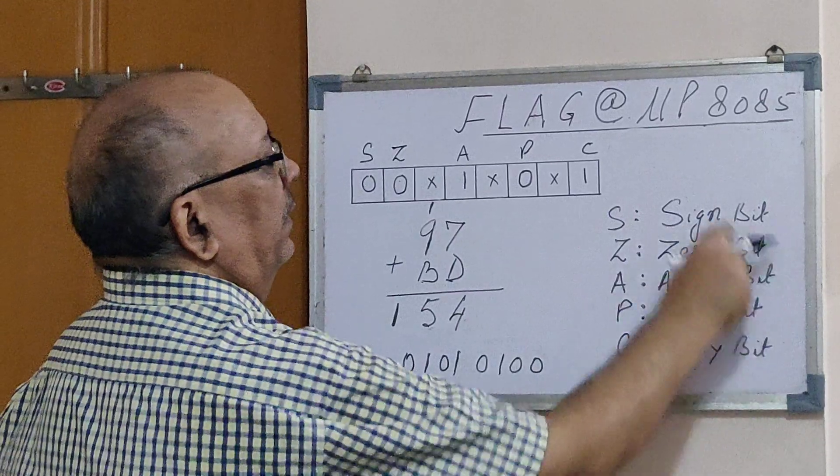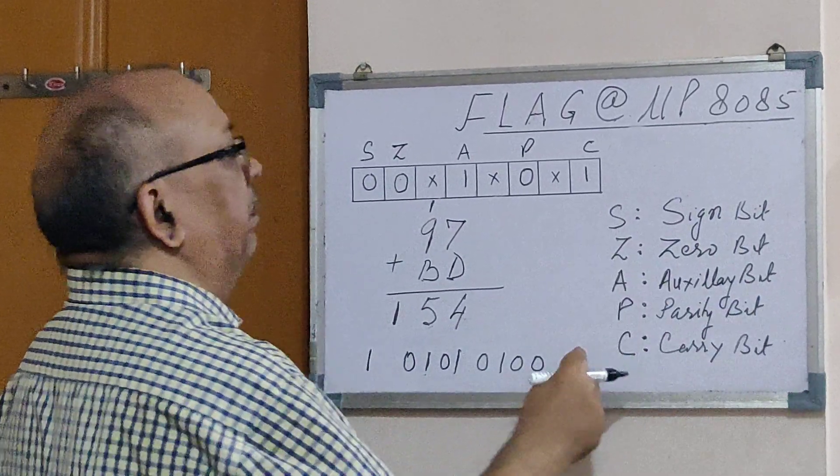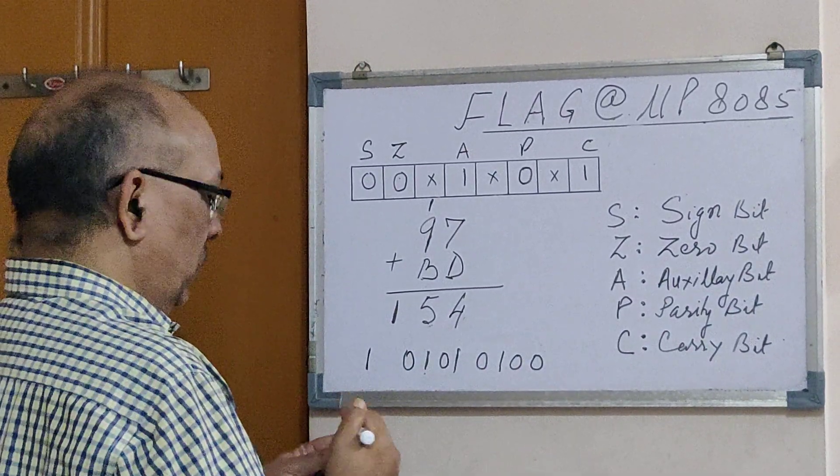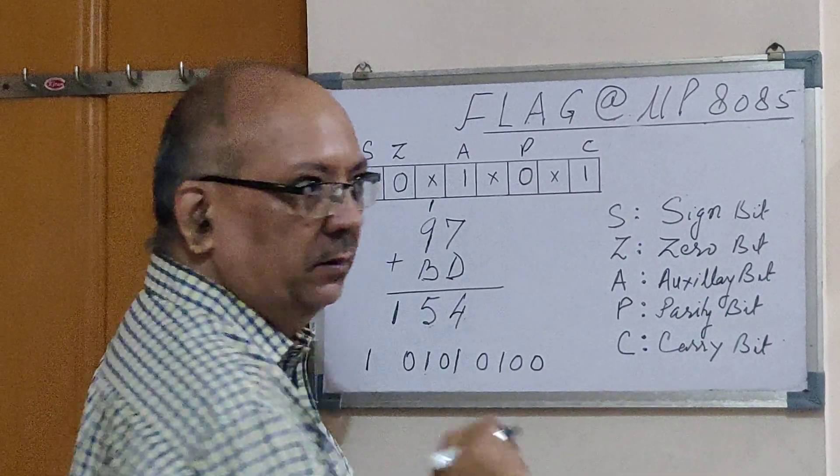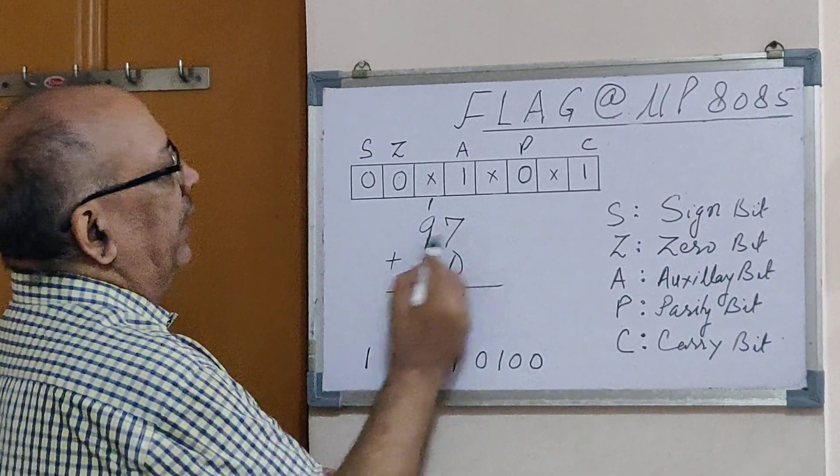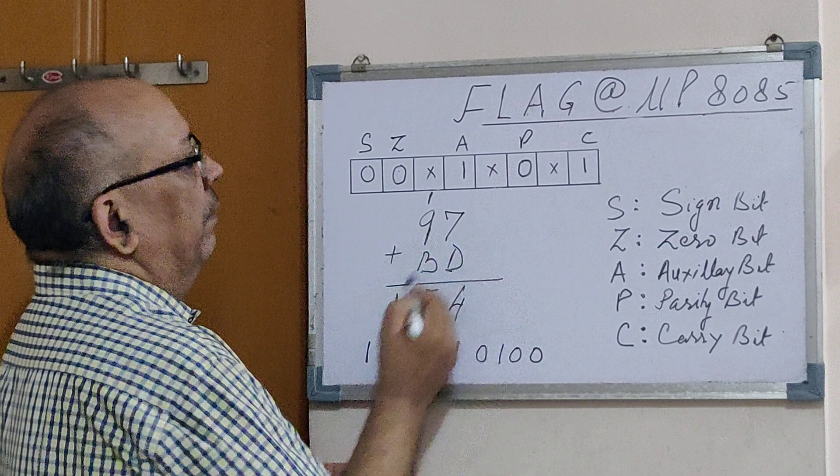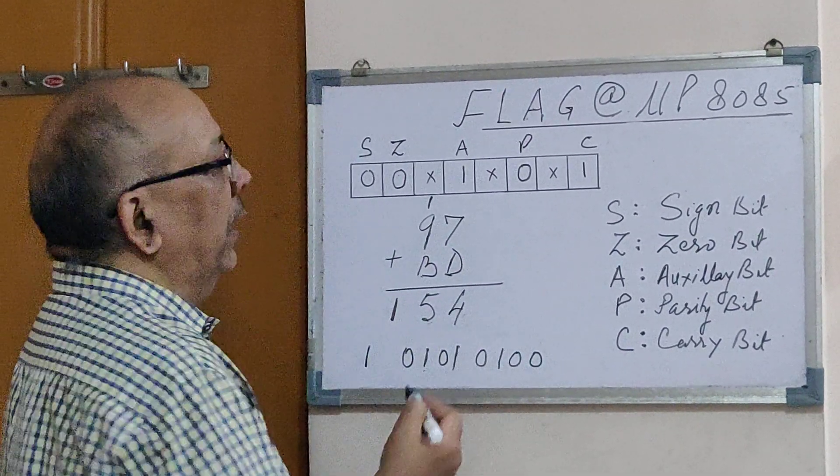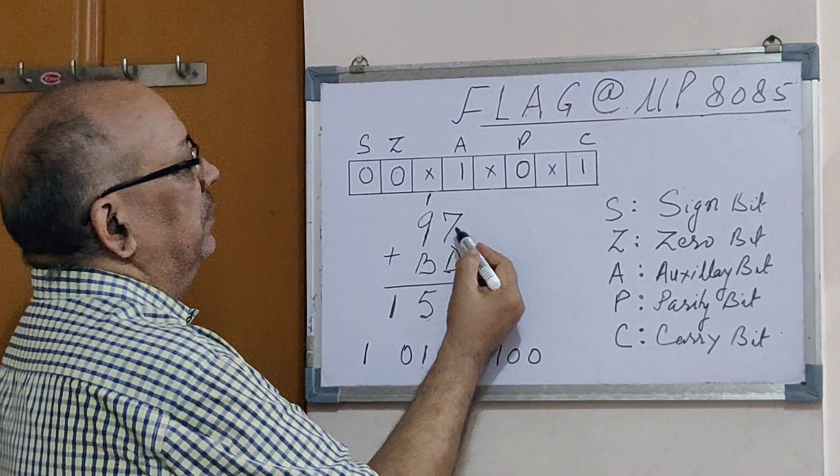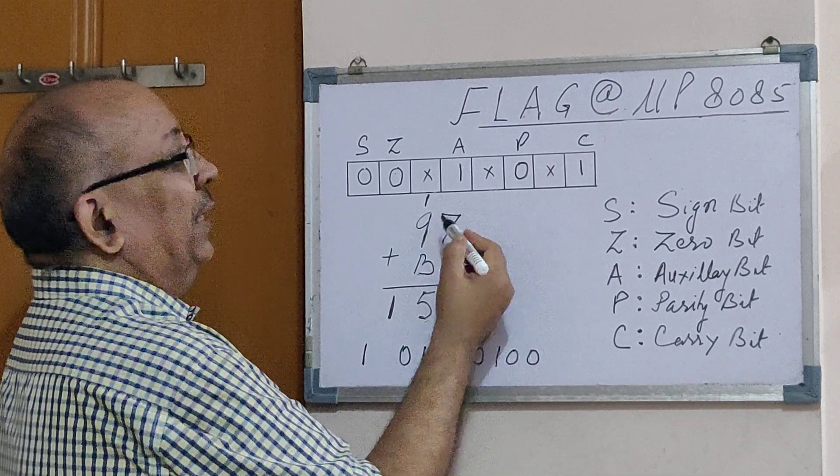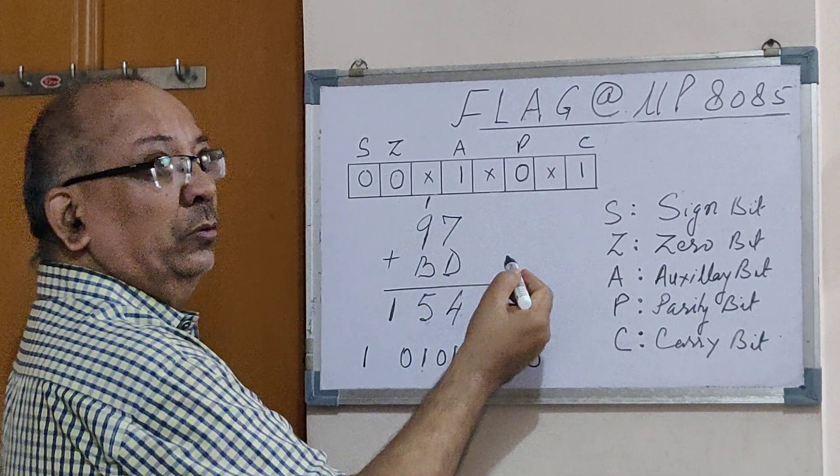So let us understand the meaning of all these bits with an example of adding two numbers in the hexadecimal system. Let us take two numbers 97 and BD in hexadecimal system. We know that when we add in hexadecimal system, wherever the summation exceeds 16, then the carry goes.